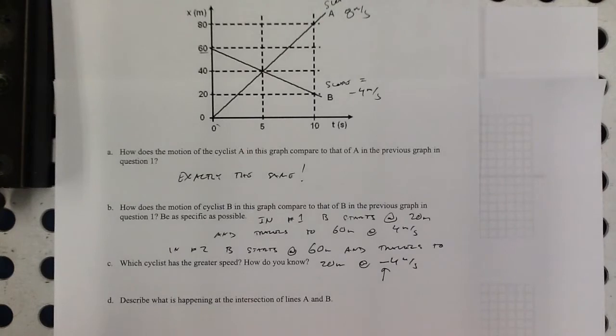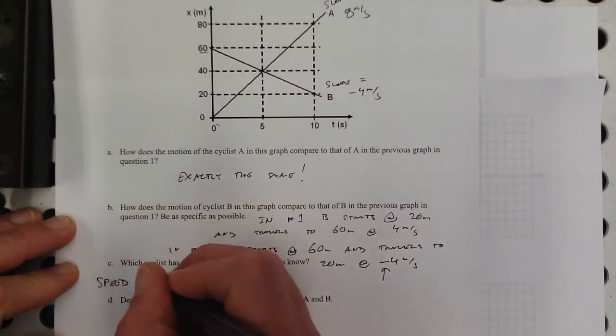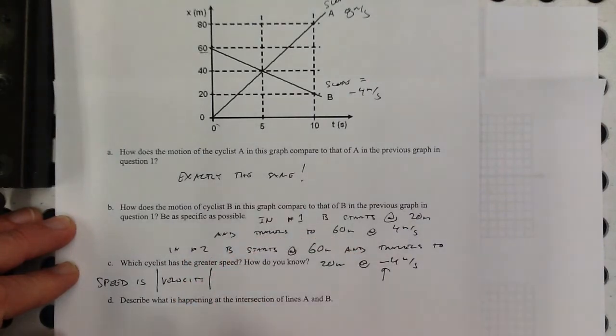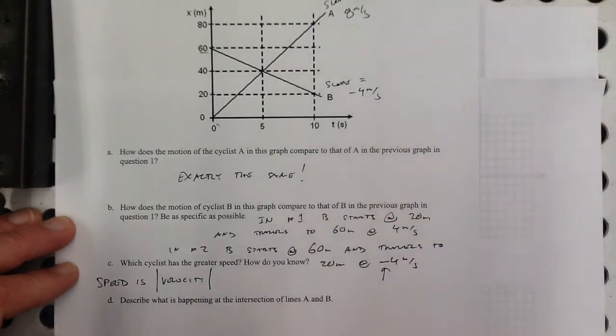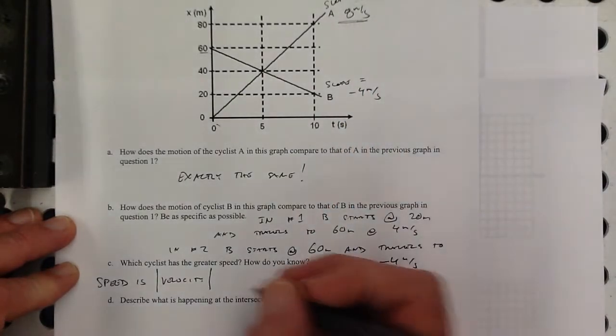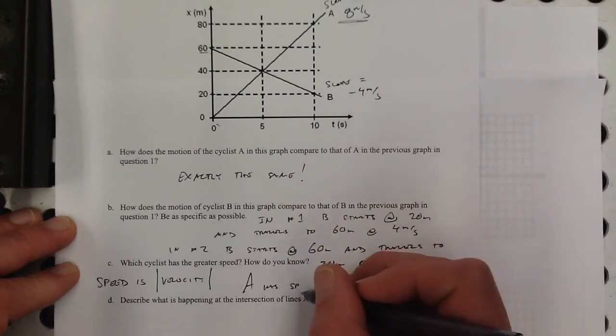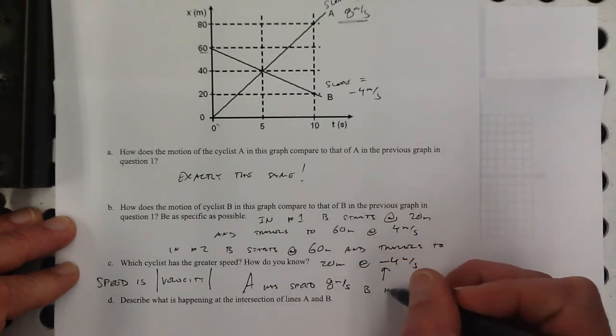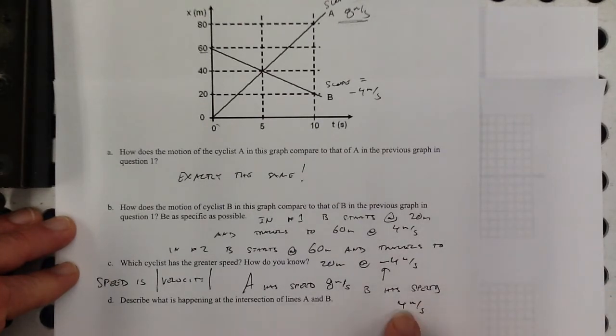Which cyclist has the greater speed? And how do you know? Speed is the absolute value of velocity. In other words, your speedometer always tells you the positive version. What are their speeds? Speed of this one would be 8. Speed of this is 4, because speed can't be negative. So still, A is faster. A has speed 8 meters per second and B has speed 4 meters per second. I'm saying 4, not negative 4, because speed doesn't care about the negative sign. Speed is always positive.